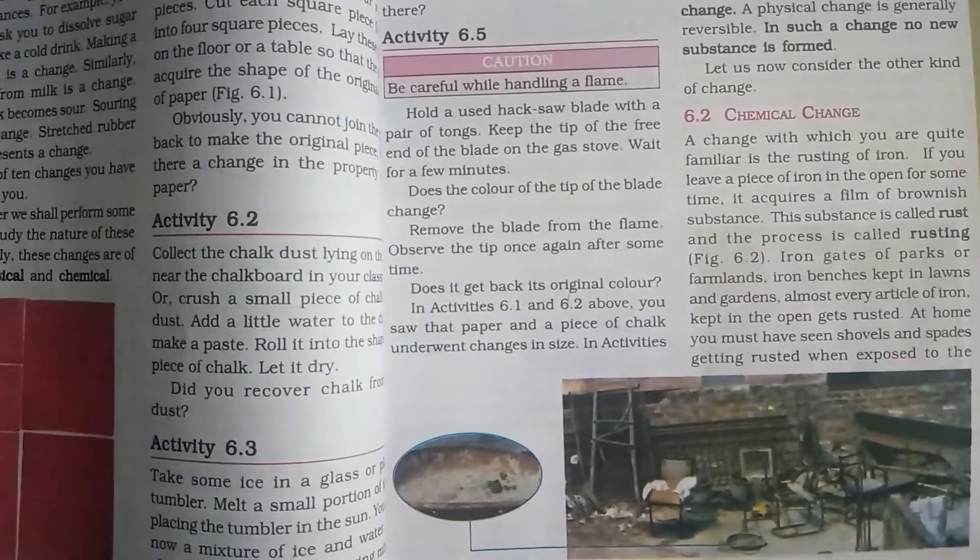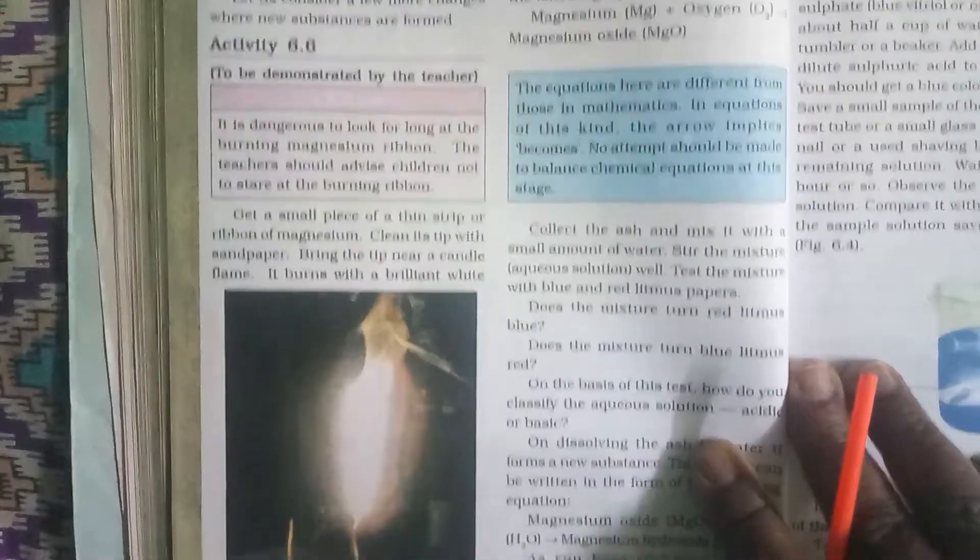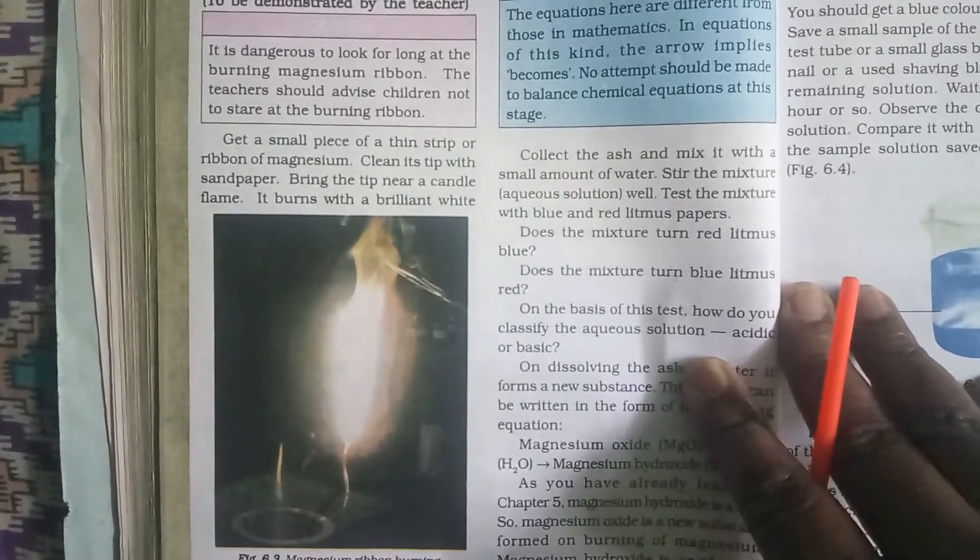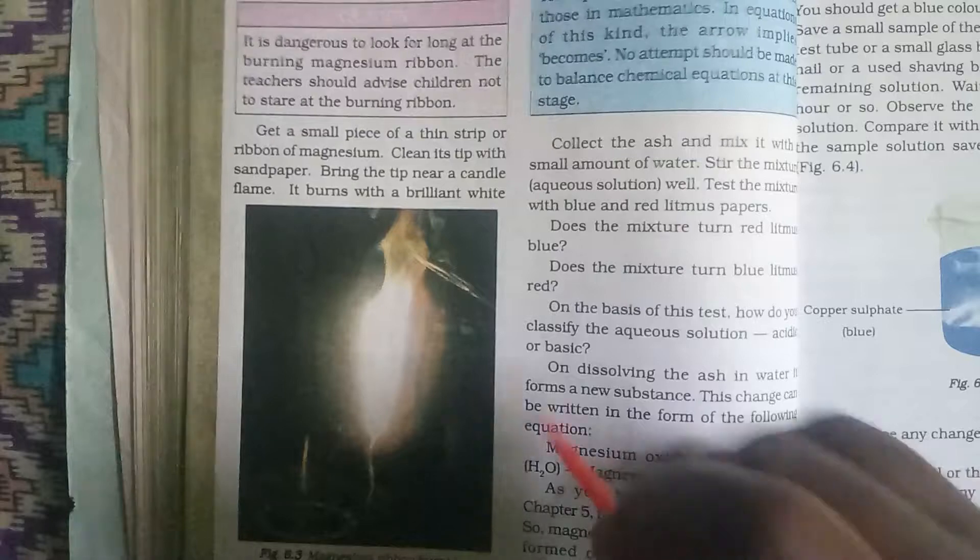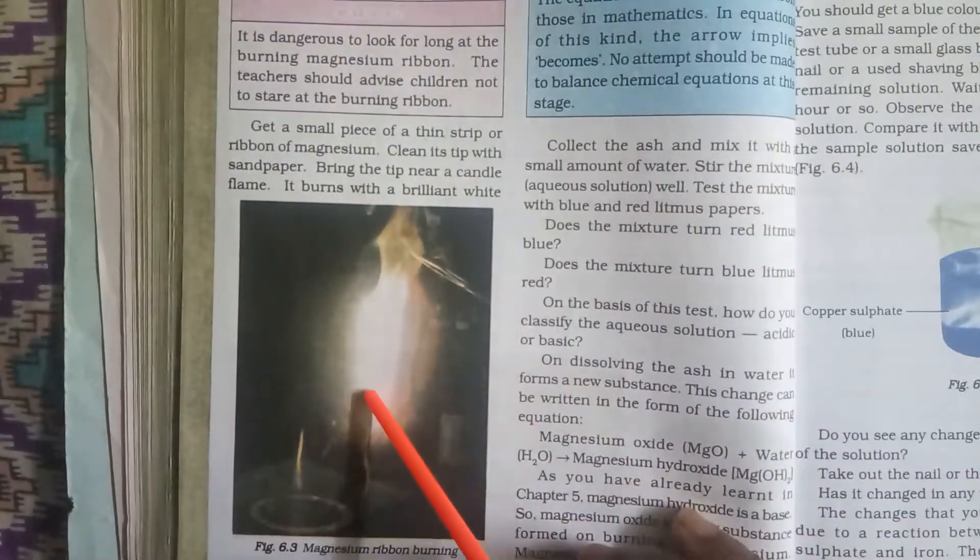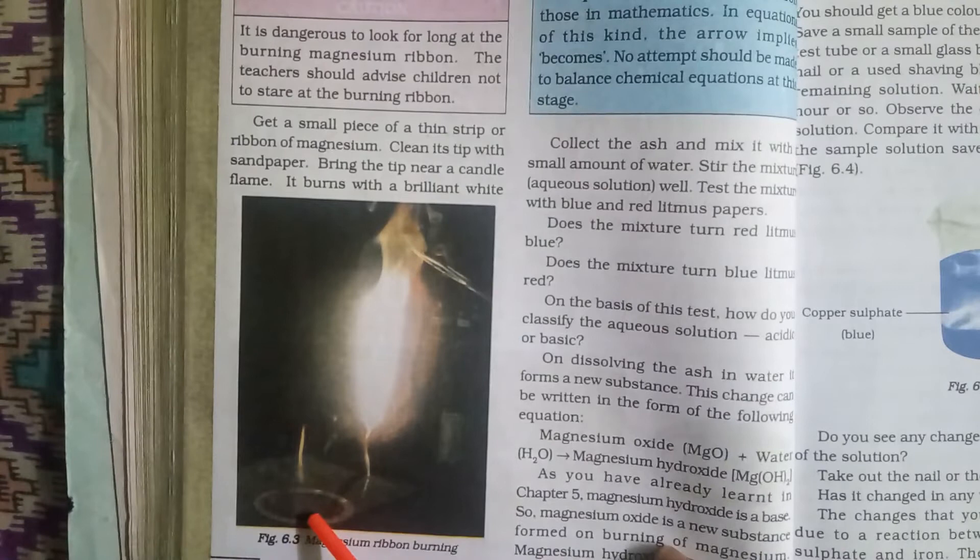Now let us see one more example children. Here in the picture you can see we have tongs here. We have some white flame and some powder structure here.